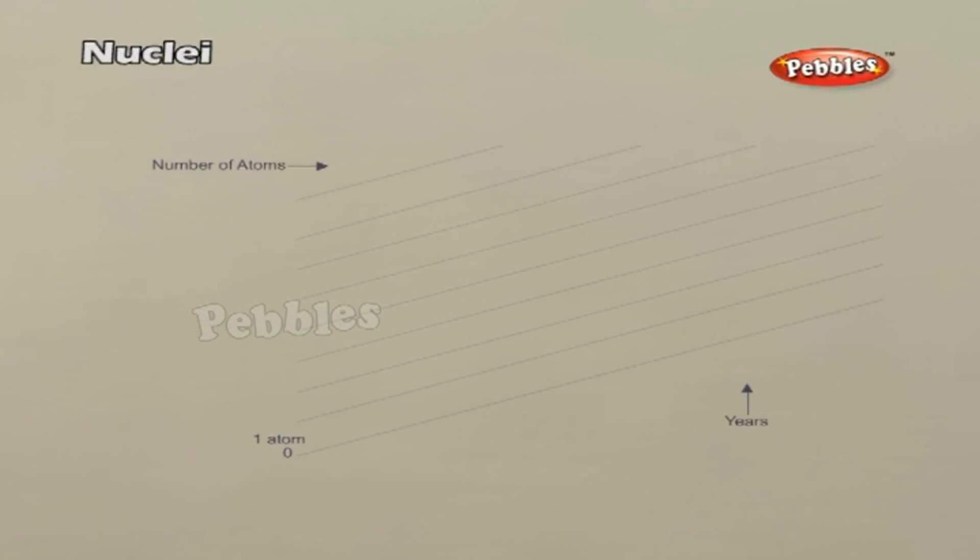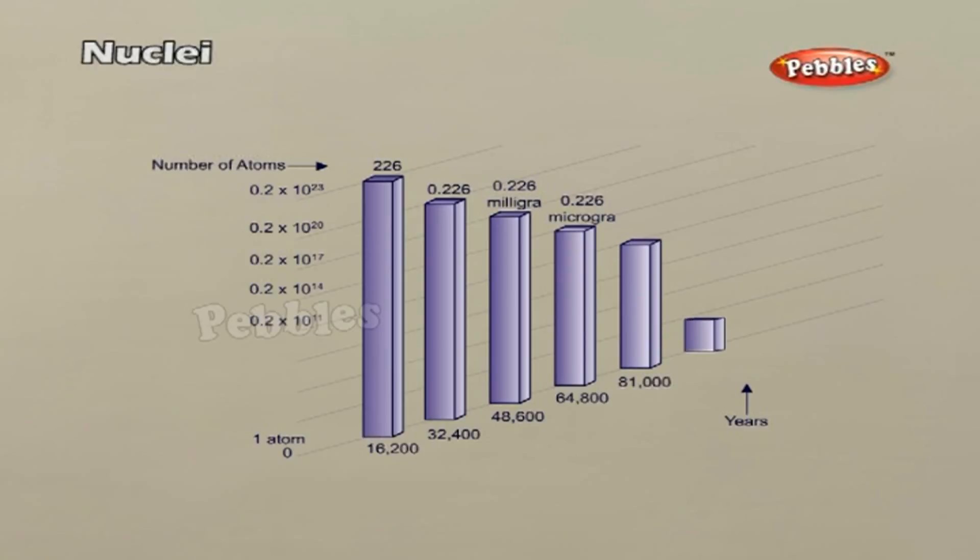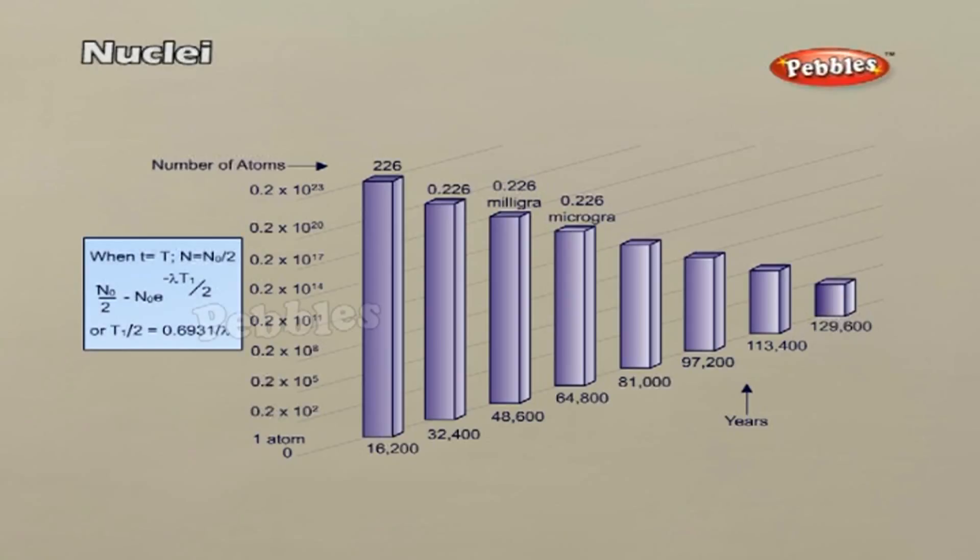Half-life. The time required for half of the atoms in any given quantity of a radioactive isotope to decay is the half-life of that isotope. Each particular isotope has its own half-life. For example, the half-life of the uranium-238 is 4.5 billion years. That is, in 4.5 billion years, half of the U-238 on earth will have decayed into other elements. In another 4.5 billion years, half of the remaining U-238 will have decayed. One fourth of the original material will remain on earth after 9 billion years. The half-life of carbon-14 is 5730 years.